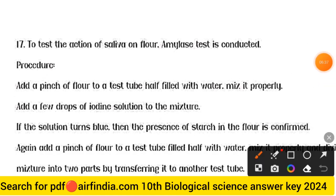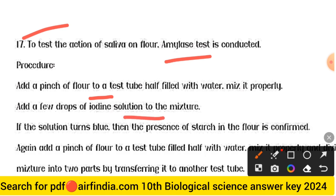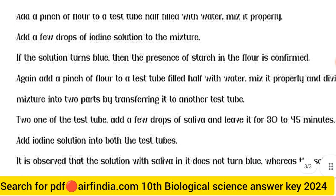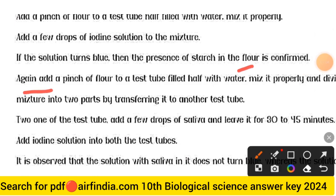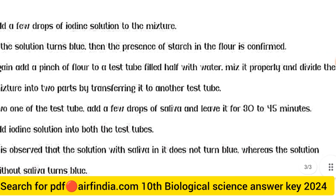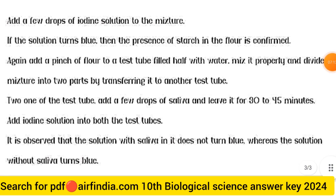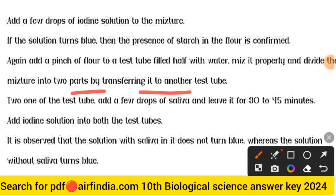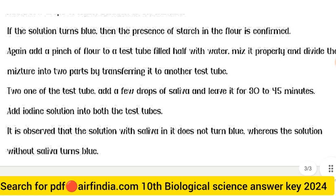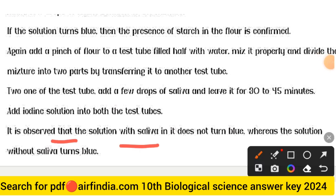Question 17 answer — Testing the action of saliva on flour (starch test): Add a pinch of flour to a test tube half-filled with water and mix. Add a few drops of iodine solution; if it turns blue, starch is confirmed. Then divide the flour-water mixture into two test tubes. Add saliva to one and leave for 30 to 45 minutes. Add iodine solution to both. The tube with saliva does not turn blue, while the tube without saliva turns blue — showing saliva breaks down starch.